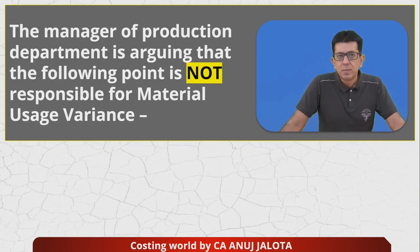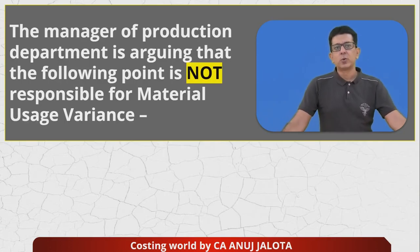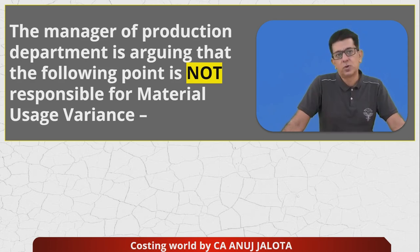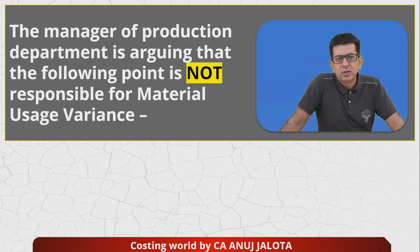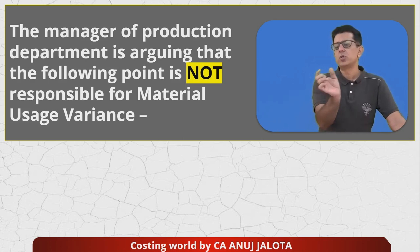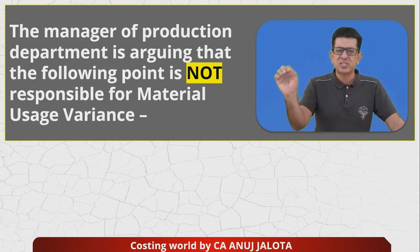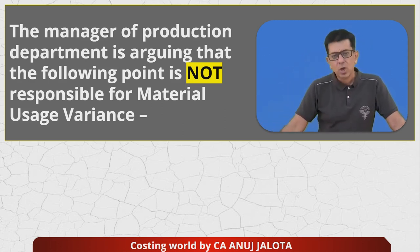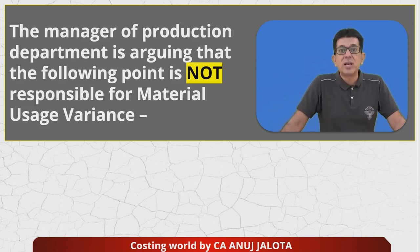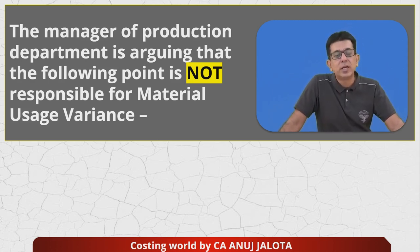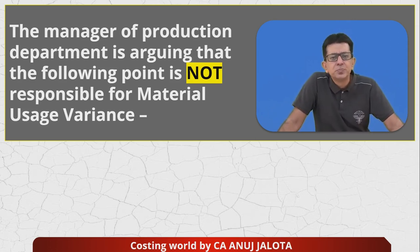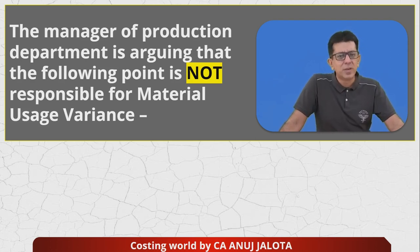Let's start. Today's question: the manager of the production department is arguing that a certain point is not responsible for material usage variance. How do you compute material usage variance? For actual output, how much raw material should have been used versus how much was actually used, multiplied by the standard rate. Material usage variance arises because actual material quantity used is not equal to the standard material quantity that should have been used.